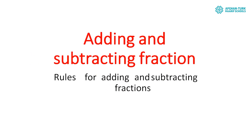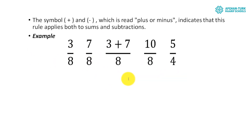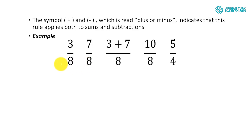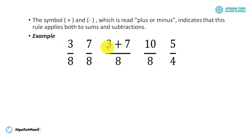For adding fractions, we have two rules. The first rule is for like fractions and the second rule is for unlike fractions. Like fractions are those fractions whose denominators are the same, and unlike fractions are those whose denominators are not the same. For denominators that are the same, addition and subtraction is very easy because we keep the denominator and just add the numerators with each other.